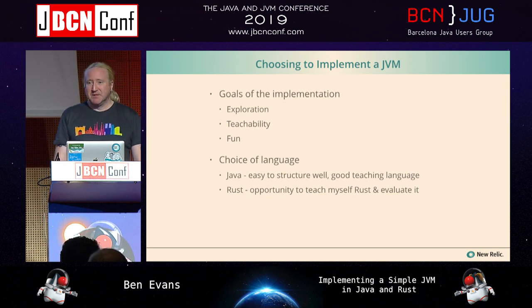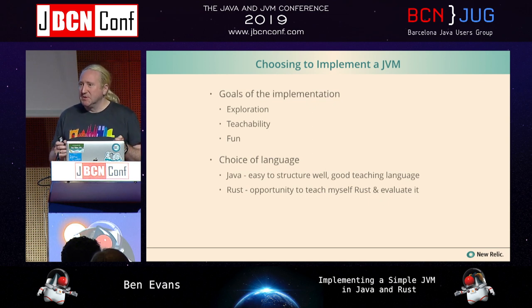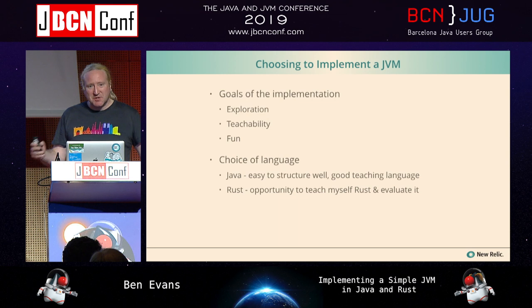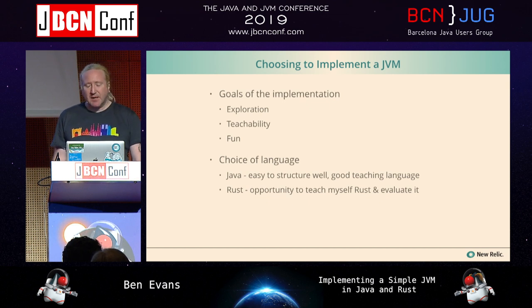When I said 'implementing a JVM in Java and Rust,' the twist is that it's not one implementation written in Java with bits in Rust — it's actually two implementations, or really the same implementation twice: once in Java and once in Rust. The Java implementation is actually the one I wrote first, so it's kind of my prototype of how to write a JVM.